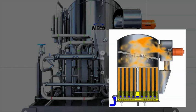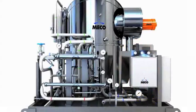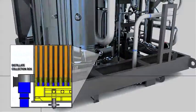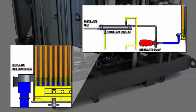Entrained water droplets which have been removed by the demister return to the process. Vapor condenses on the outside of the evaporator tubes forming distillate. Distillate drips down the tubes, is gathered in the distillate collection box, and is then pumped out by the distillate pump through a cooler and out of the still for use.